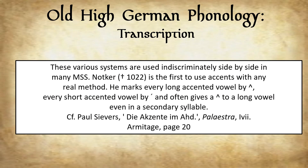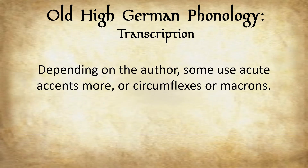So already in the 11th century we have Notker using diacritics with some practicality. Depending on the author, some use acute accents more, others use circumflexes or macrons. In my experience, English authors tend to use macrons while German authors tend to use circumflexes — though each linguist uses diacritics in their own way. Generally speaking, when you see these diacritics on vowels, they denote a long vowel. Occasionally, as mentioned, you would have an umlaut 'e' in Old High German or other Old Germanic languages to denote the original Proto-Germanic 'e.'